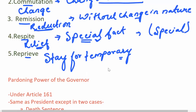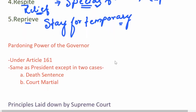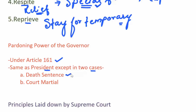Let us also look at the pardoning power of the Governor. Under Article 161, the Governor has been given the pardoning power. All the powers are similar to that of the President except in two cases. First, the Governor cannot grant pardon in a death sentence, even though this sentence has been awarded under state law. Next, the Governor cannot pardon a sentence given by a court martial. So these are the two exceptions.